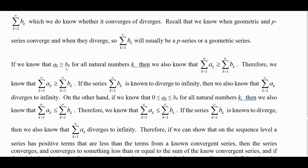If a sub k is greater than or equal to b sub k for all natural numbers k, then the sum from k equals 1 to n of a sub k is greater than or equal to the sum from k equals 1 to n of b sub k. Taking limits, the sum from k equals 1 to infinity of a sub k is greater than or equal to the sum of b sub k. So if b sub k is known to diverge to infinity, that makes the sum of a sub k diverge to infinity as well.